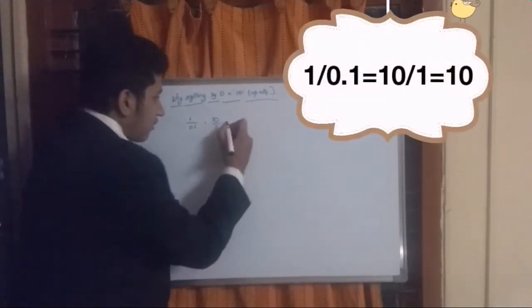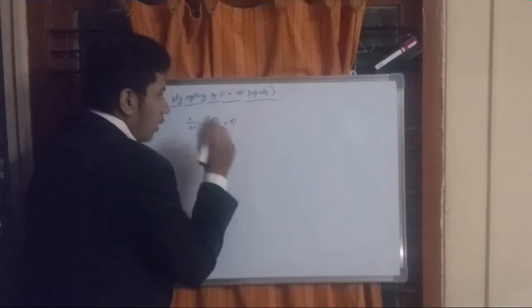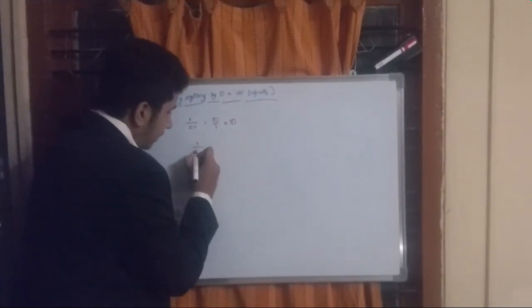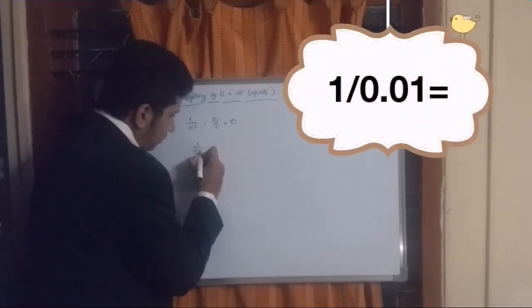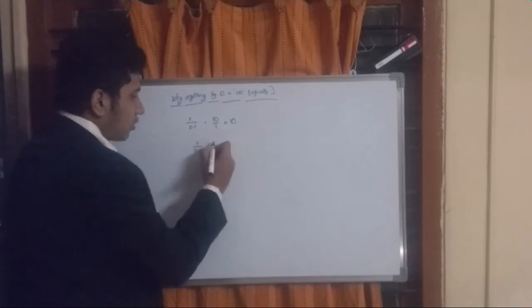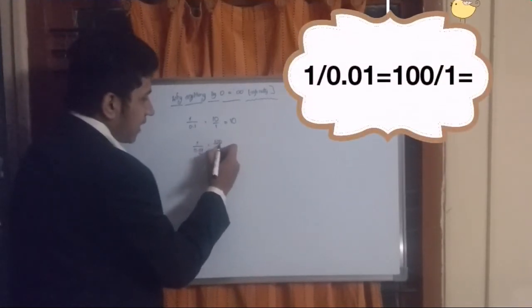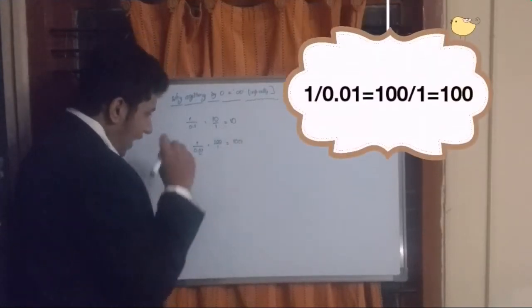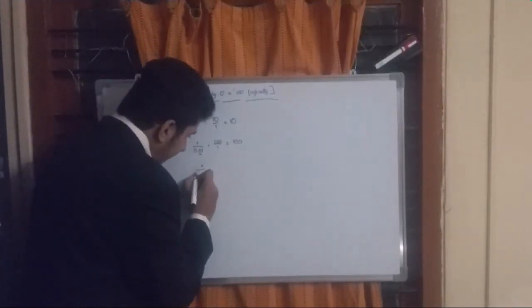Again, 1 divided by 0.01. Here, there are two decimal places, so it's 100 divided by 1, and therefore it's 100. Again, 1 divided by 0.001 equals 1000 divided by 1, which equals 1000.